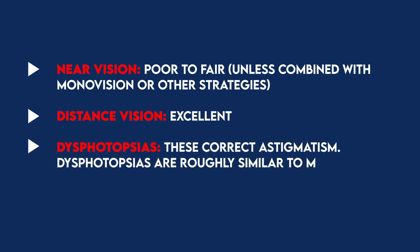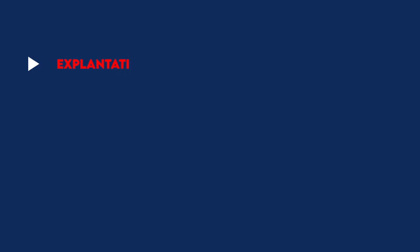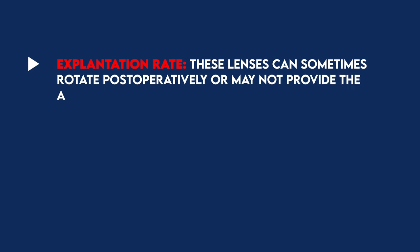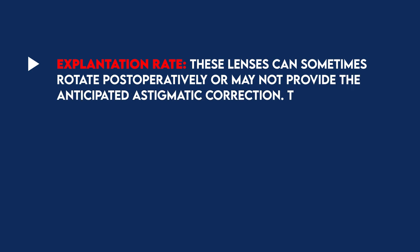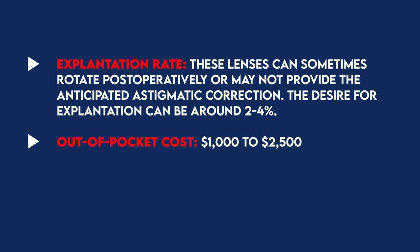Dysphotopsias: toric lenses correct for astigmatism, and dysphotopsia rates are roughly similar to monofocal lenses. Explantation rate: these lenses can sometimes rotate after surgery causing visual problems, or may not provide the anticipated astigmatic correction. The desire for explantation can be around 2 to 4% of patients. Out-of-pocket cost is approximately $1,000 to $2,500 per eye.